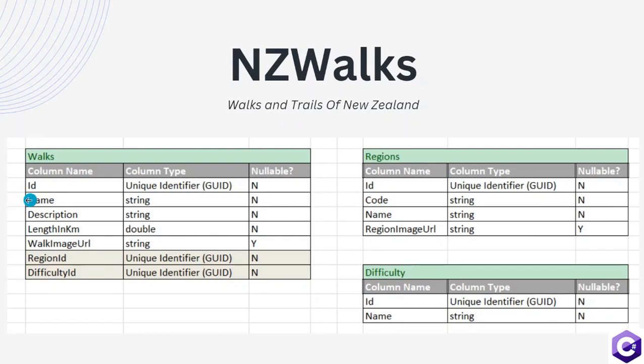Then we will also have the property of name, which will be the name of the walk. This will be of type string and will always hold a value. Then we will have a brief description about the walk, and that will be of type string as well. Then we will have the length of the walk in kilometers, which will be a type of double and also non-nullable. After that, we want to store the image of the walk as a URL, which will be of type string. This will be an optional field, meaning in the database it will be nullable.